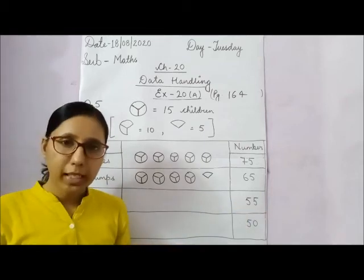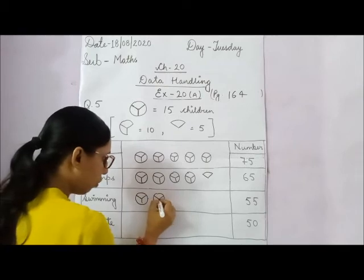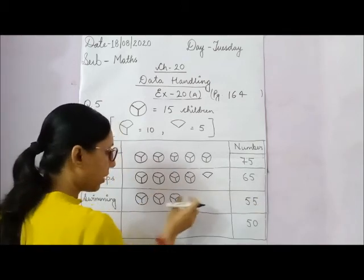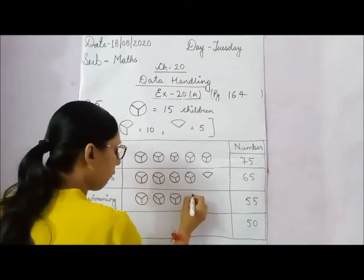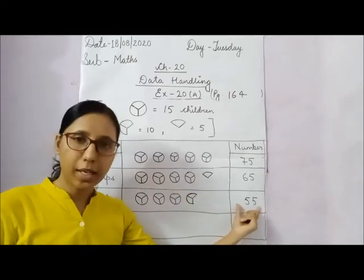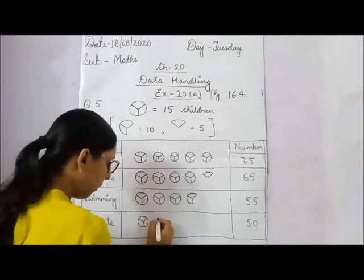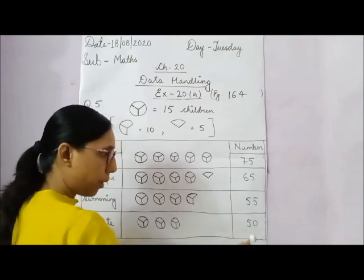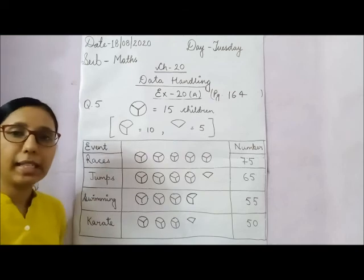For swimming, there are 55 students. 15 times 3 is 45, so make 3 complete pictures. We still need 10 more children, so add the partial picture showing 10 children, giving 55 total. For karate, there are 50 students. Again make 3 complete pictures for 45, then add the partial picture showing 5, making 50 total.